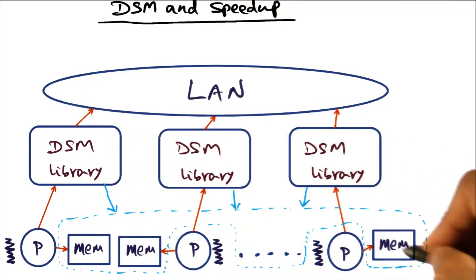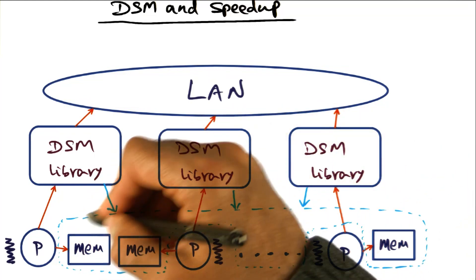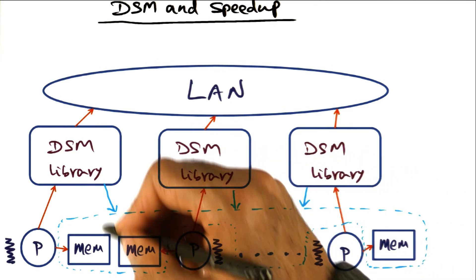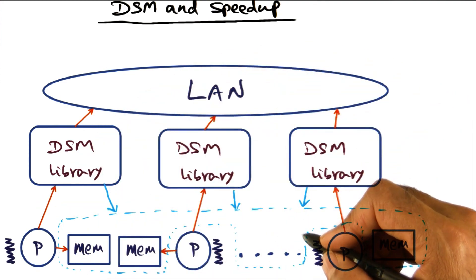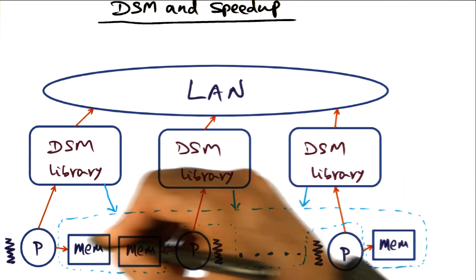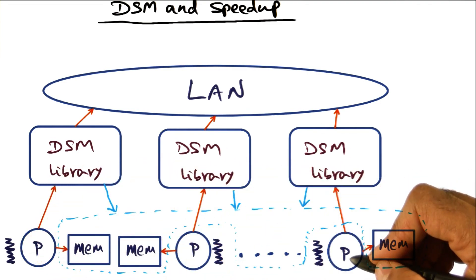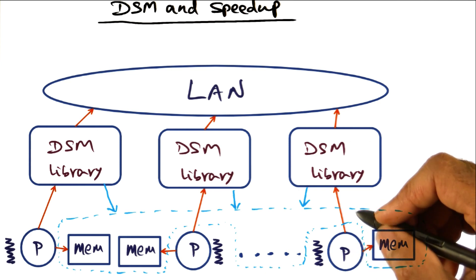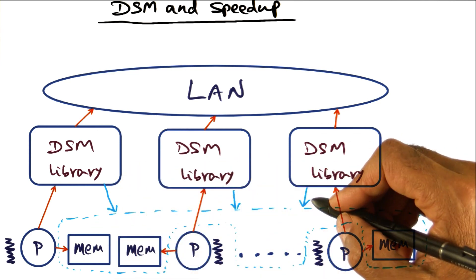So we have this illusion of shared memory, which is implemented by physical memories that are strewn all over the entire cluster. And the hope is that the application running on the different nodes of this cluster will actually get speed up with increasing number of processes.